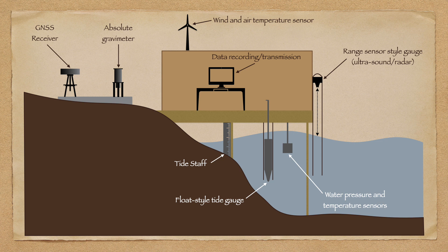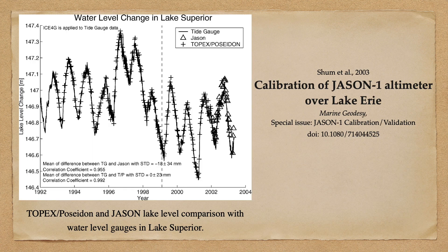Whichever technique is used, an array of supplementary data must also be collected: wind strength and direction, air and water temperature, and any vertical land motion of the tide gauge itself, which is detected and corrected for using GNSS data. In this figure we see an intercomparison between satellite altimetry data, shown as crosses or triangles, against water level gauge data, shown as a solid line, for Lake Superior. We can immediately see that the agreement between the two data sets is extremely good, with a weighted RMS difference of less than two and a half centimeters.